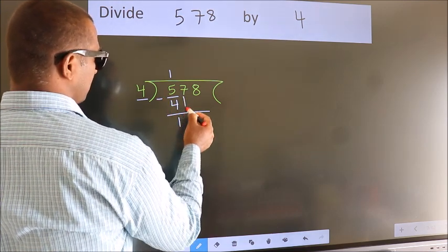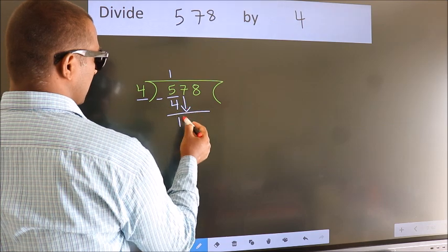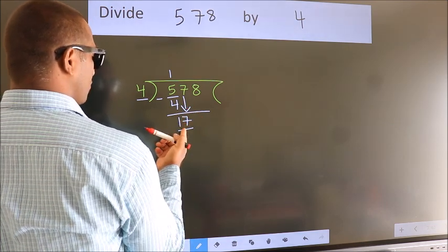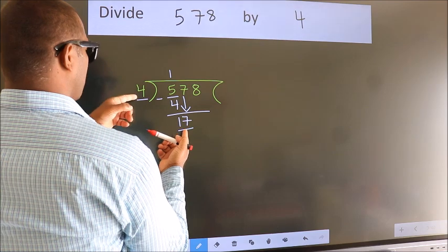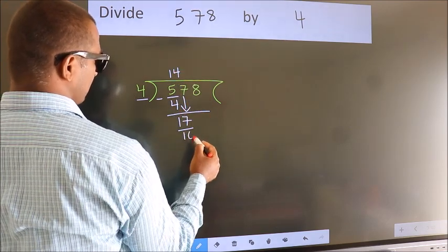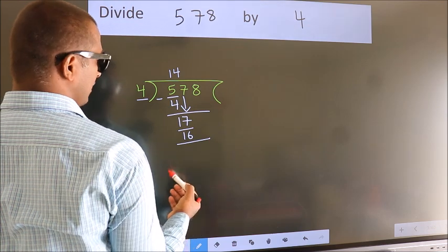After this, bring down the beside number. So 7 down. So 17. A number close to 17 in the 4 table is 4 4s 16. Now we subtract.